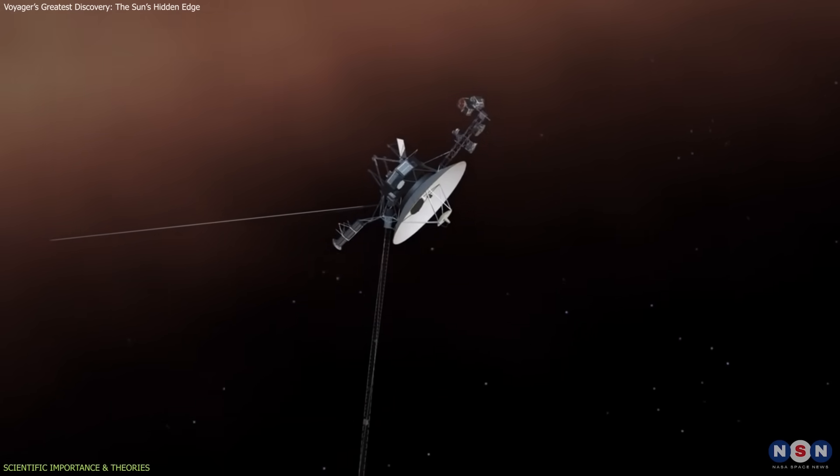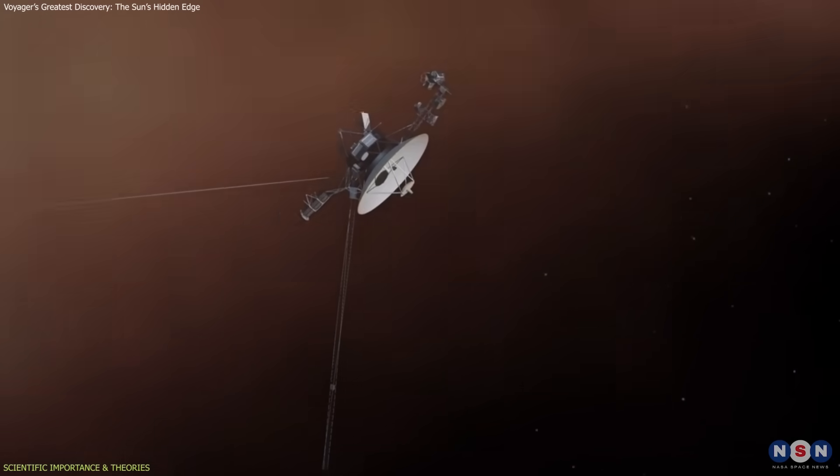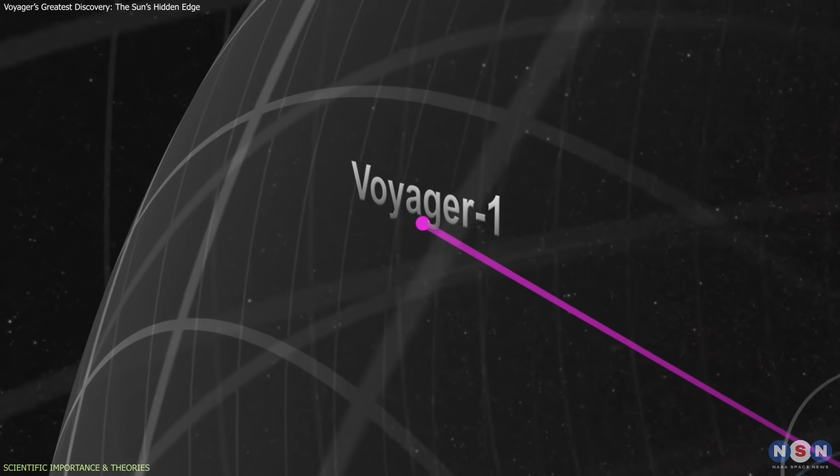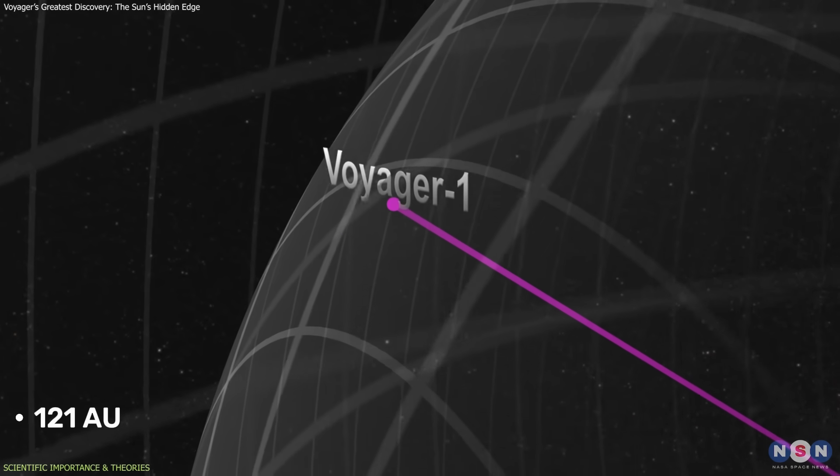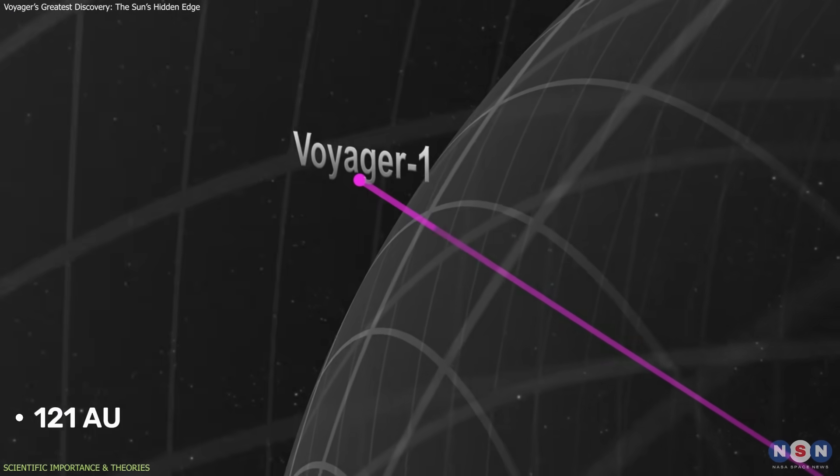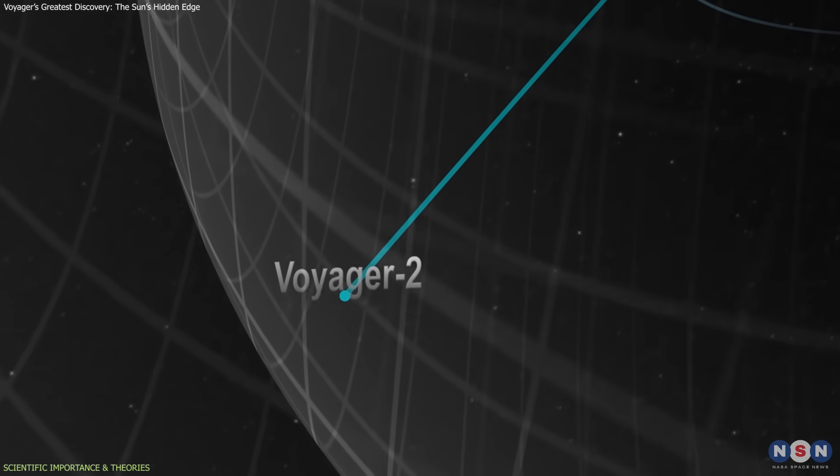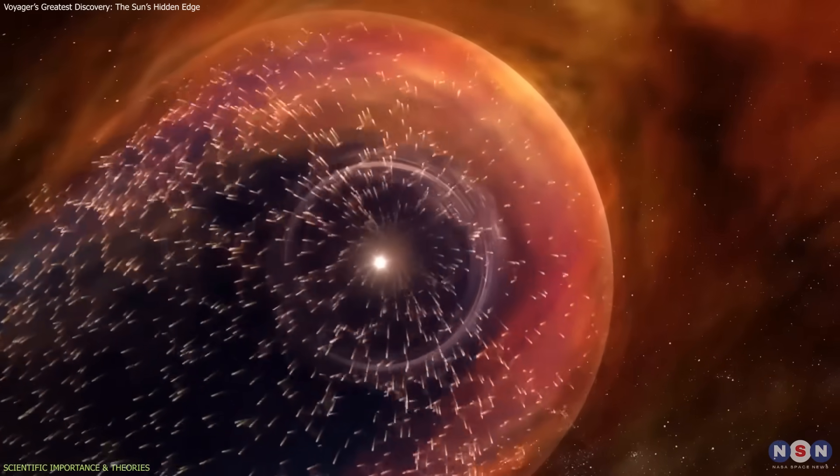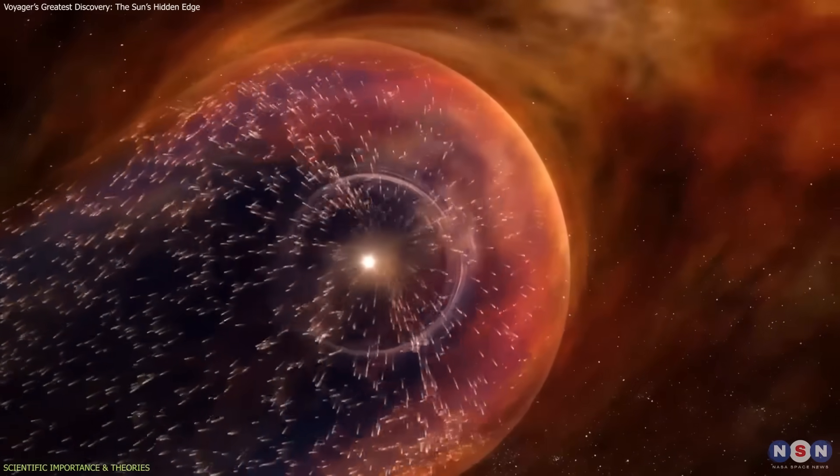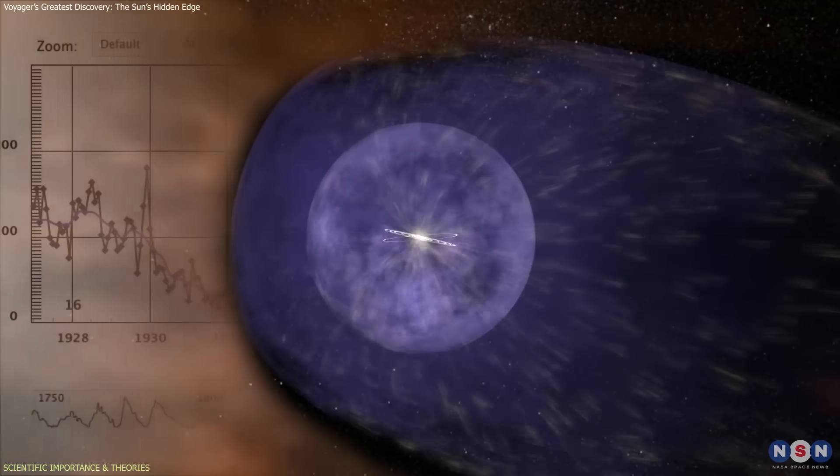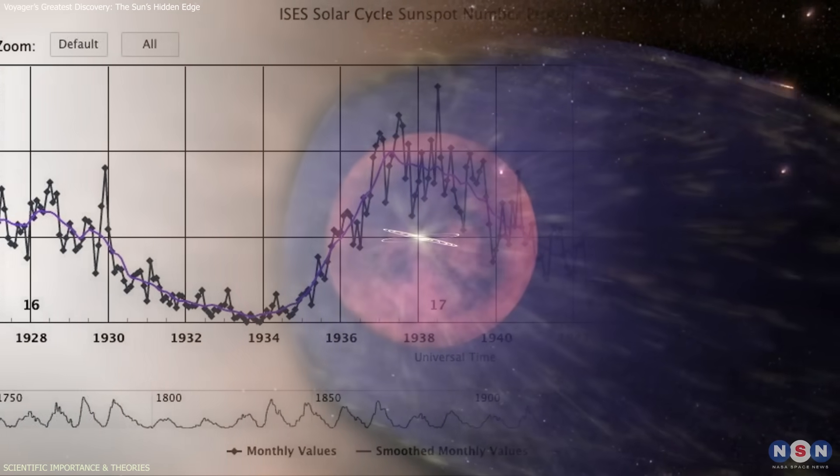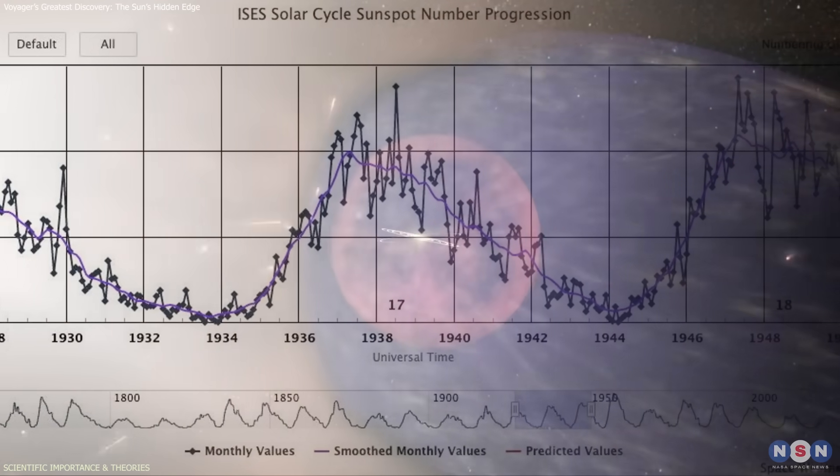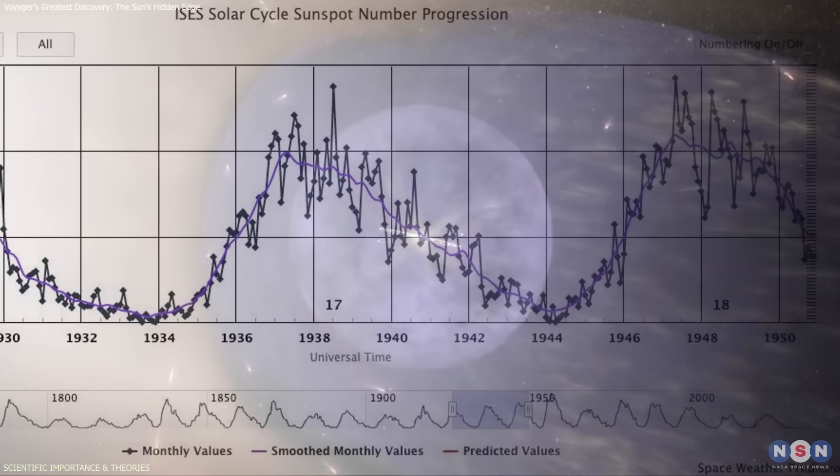Another striking finding was the different crossing distances. Voyager 1 passed the heliopause at 121 astronomical units. Voyager 2 at 119 astronomical units. This small difference confirmed that the heliosphere isn't static. It expands and contracts with the Sun's activity cycle, stretching outward when the Sun is active and shrinking when it's quiet.